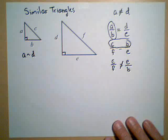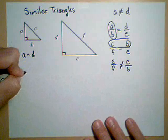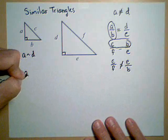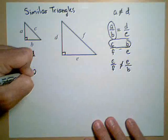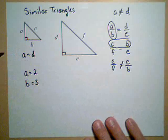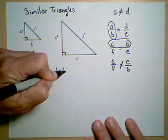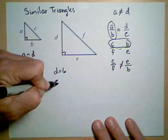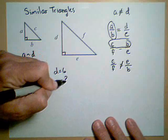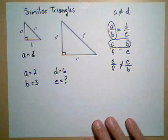So that's how we set up similar triangles. Now, how this works, let's give these some sizes. Let's say that A equals 2 and B equals 3 and D equals 6, and they want to know what E is equal to.